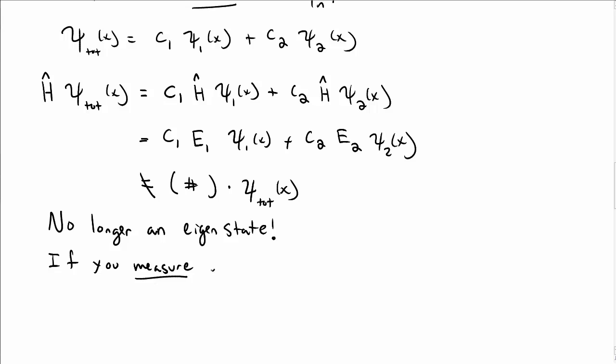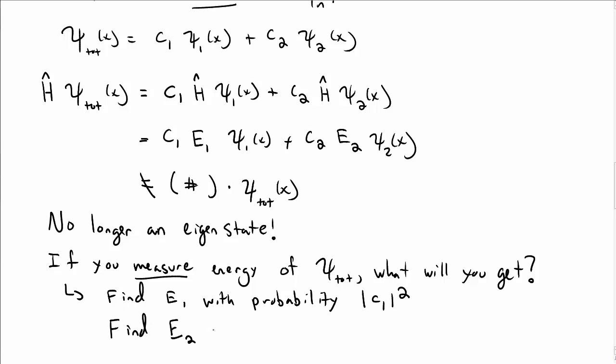If you were to measure the energy of psi tot, what would you get? Well, in this case now, you will find energy e1 with some probability given by c sub 1 absolute value squared, and similarly you'll find e sub 2 with a probability of absolute value of c sub 2 squared.